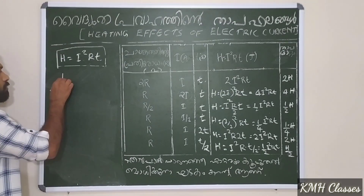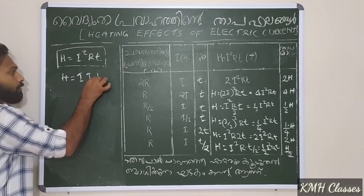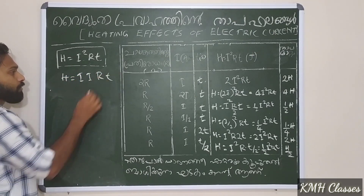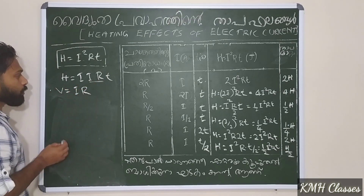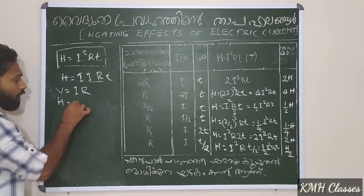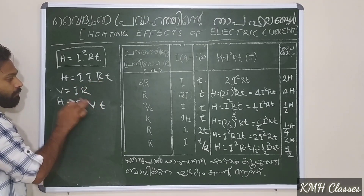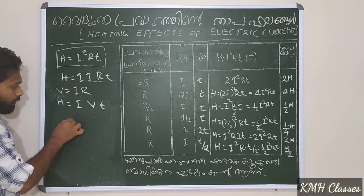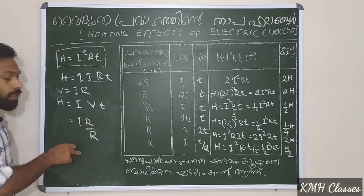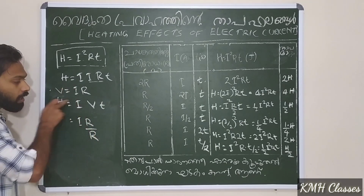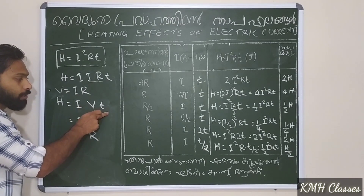H is equal to I squared R. I into R into T. I R is equal to V — equal to Ohm's Law. H is equal to V into T. I will add V into T. R by R is equal to 1. R by R is equal to 1. I will add V into T.